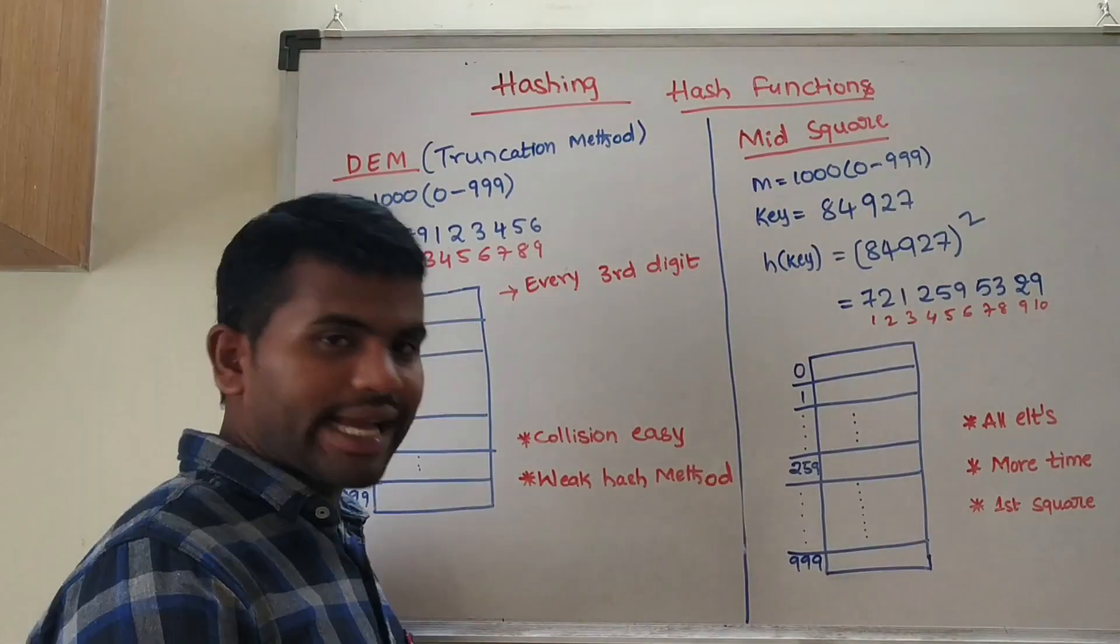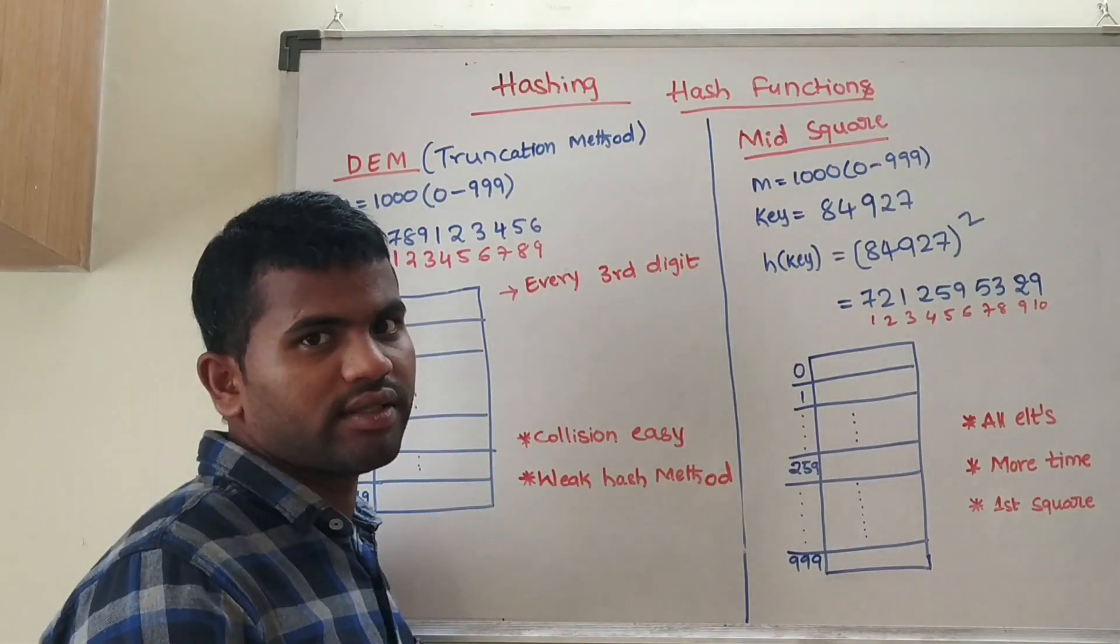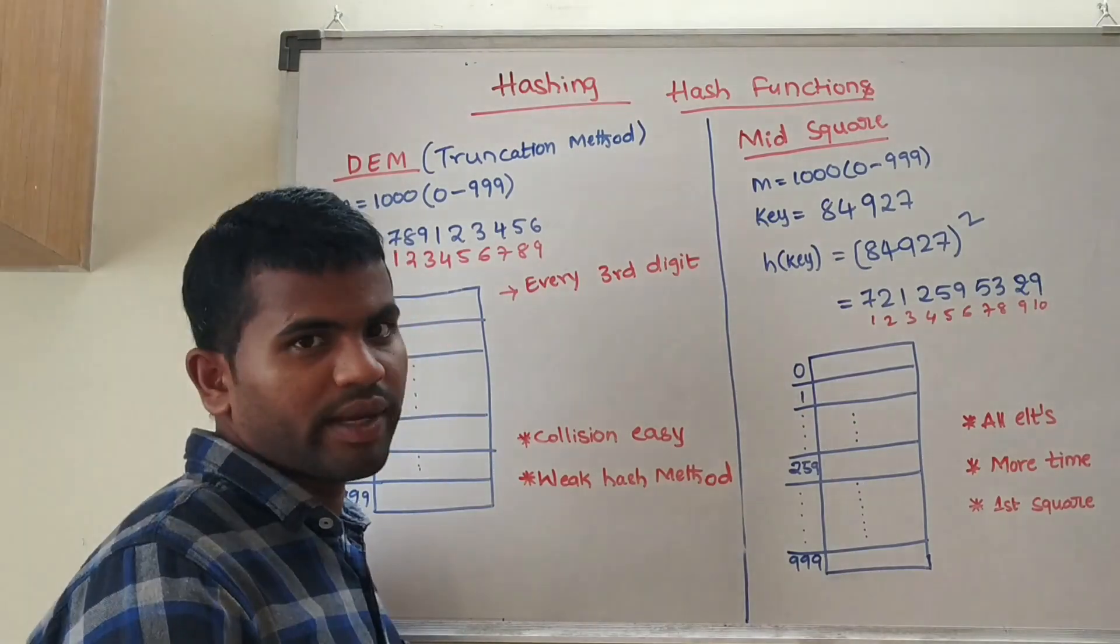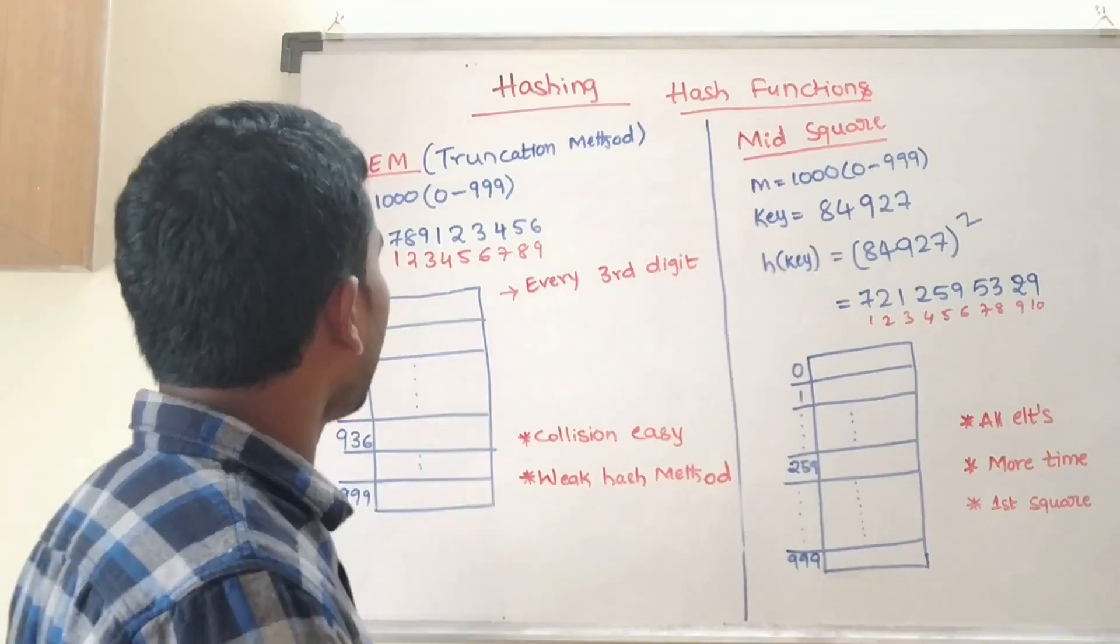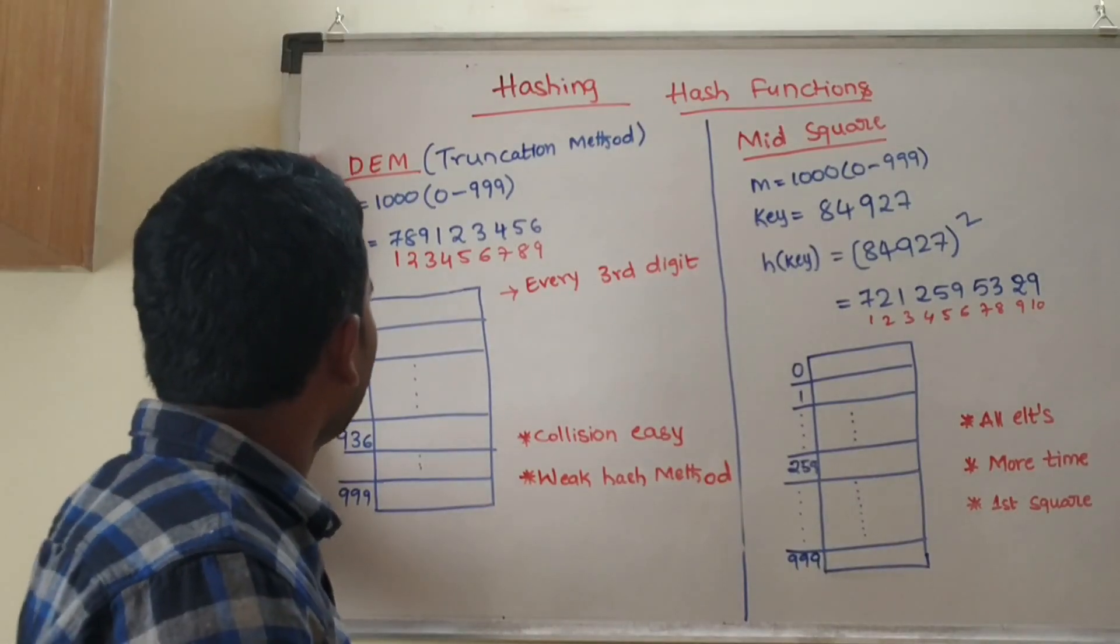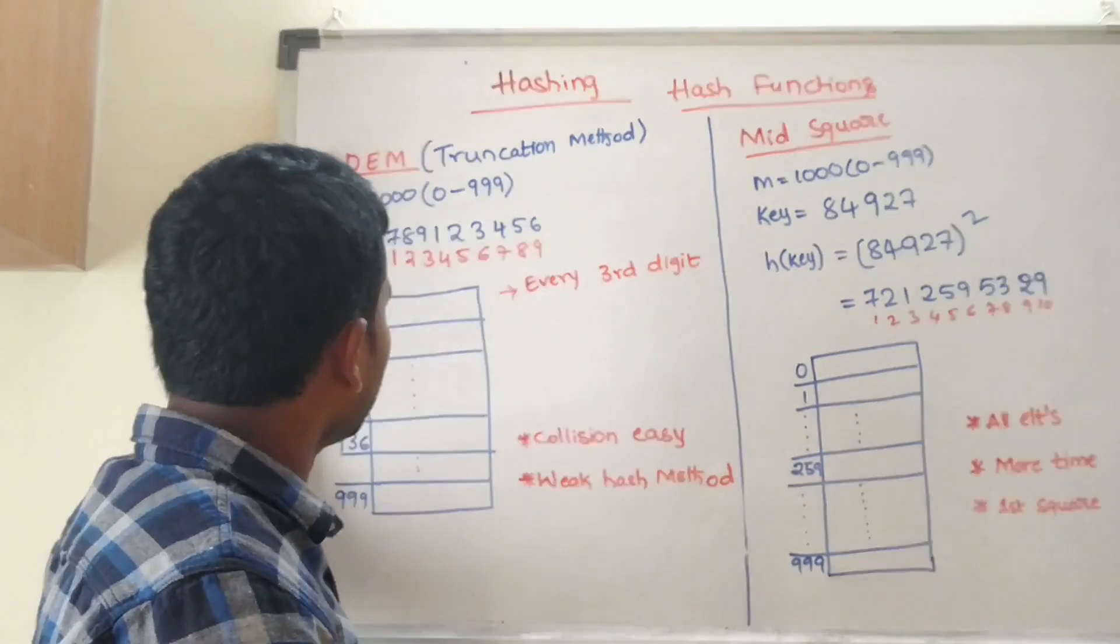So this is digit extraction method and mid square method. We will see these two methods and which one is better, called as truncation method. See, the hash table size is a thousand.